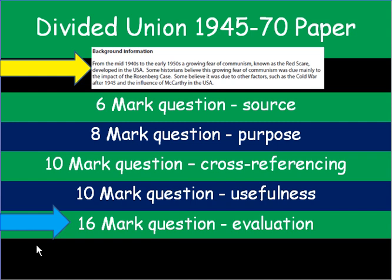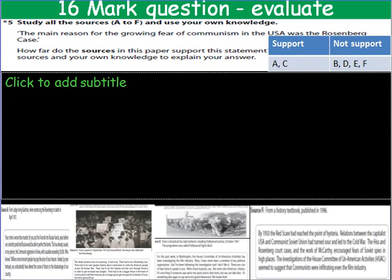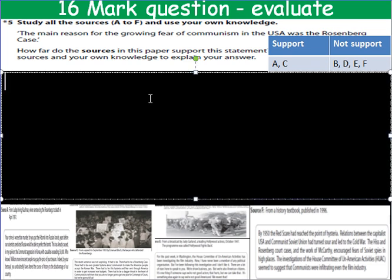Welcome to the last part of the Divided Union walkthrough, where I'll be taking you through a 6D mark question. This is a question about using all of the sources in the paper, putting them together and evaluating, coming to a judgement again using all of the sources. So let's have a look at that final question: 'The main reason for the growing fear of communism in the USA was the Rosenberg case.' Study all the sources A to F and use your own knowledge. How far do the sources support the statement that the Rosenberg case was the main reason for the growing fear of communism?